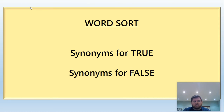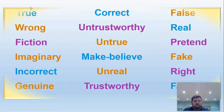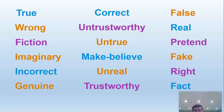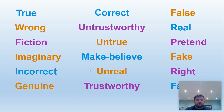So, synonyms for true and false. Think about true and false — what do we mean by those words? Can you think of other words that have the same meaning? You might say correct or right for true, and phony or false as options for false. Here's a list of words: true, wrong, fiction, imaginary, incorrect, genuine, correct, untrustworthy, untrue, make-believe, unreal, trustworthy, false, real, pretend, fake, right, and fact. If you'd like to, pause the video here and see if you can split them into two columns — synonyms for true and synonyms for false.